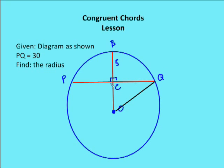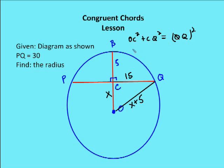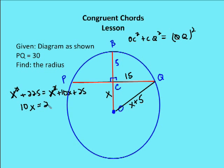So CQ and PC are equal, and if PQ is 30, then CQ is equal to 15. I'll define CO as equal to X, so OQ, the radius, is going to be X plus 5. Using the Pythagorean theorem: OC squared plus CQ squared equals OQ squared, so X squared plus 225 equals X plus 5 squared, which is X squared plus 10X plus 25. Subtracting X squared from both sides gives 225 equals 10X plus 25, then subtracting 25 gives 10X equals 200.